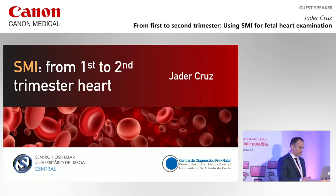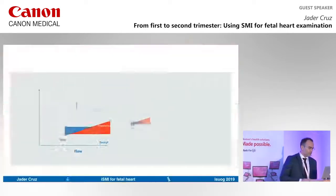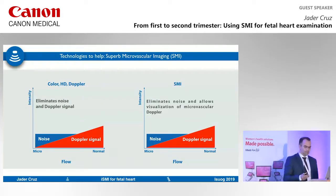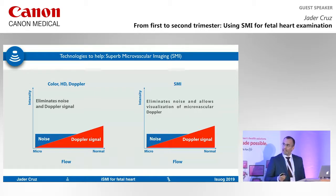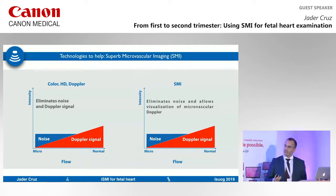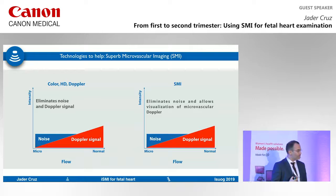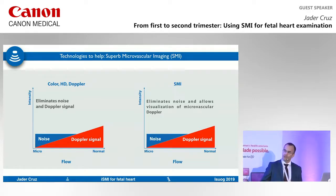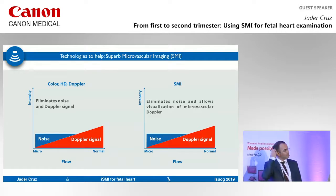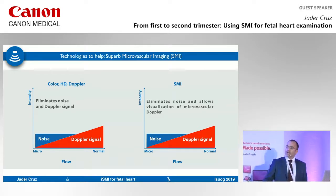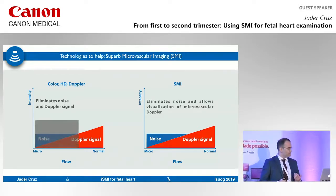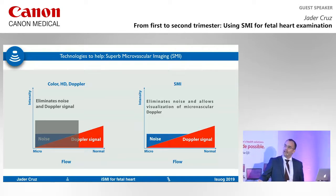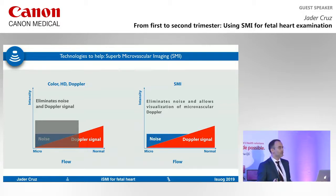Afterwards we are going to do a live scan on a second trimester baby. So, what is SMI? It looks very technical but it's actually quite simple. When you have a Doppler signal, you always have a little bit of noise. The machine cuts the noise, but you lose a little bit of the Doppler signal as well.